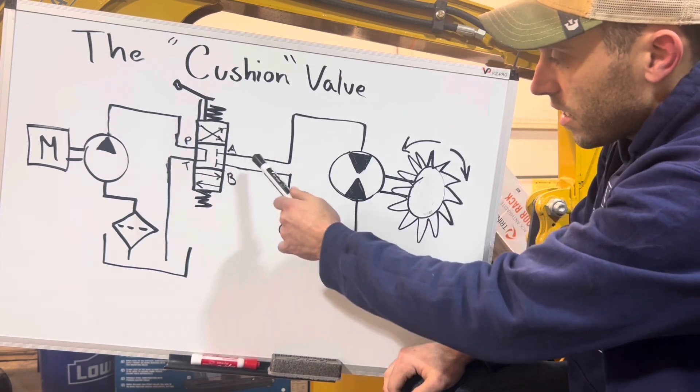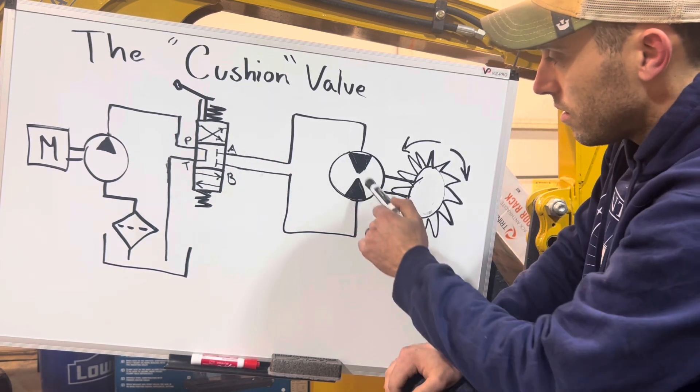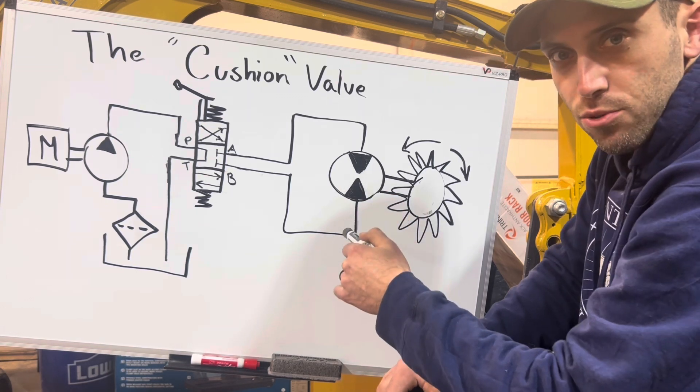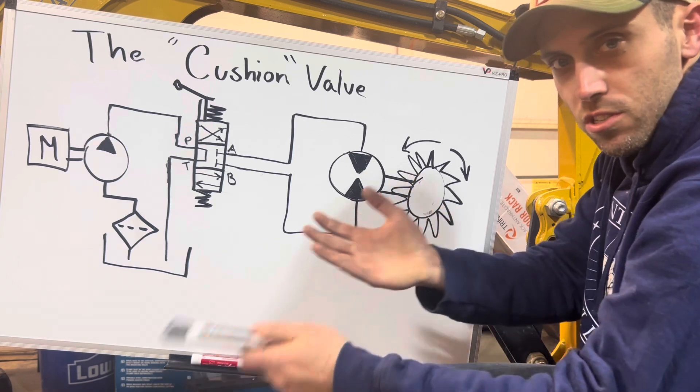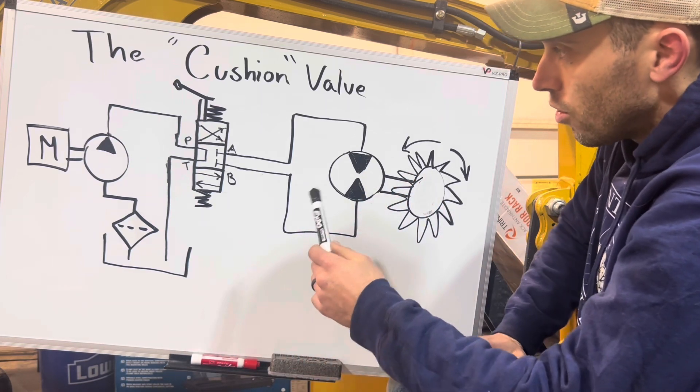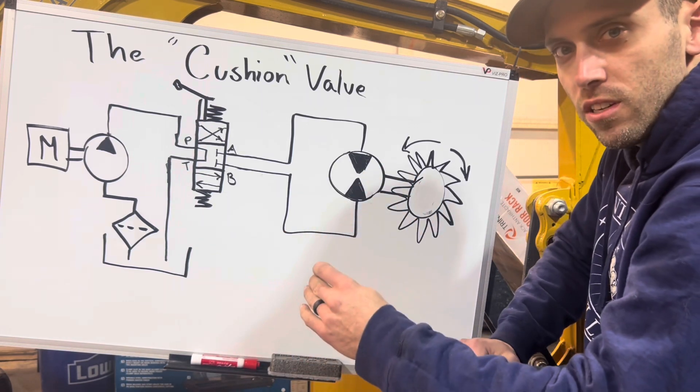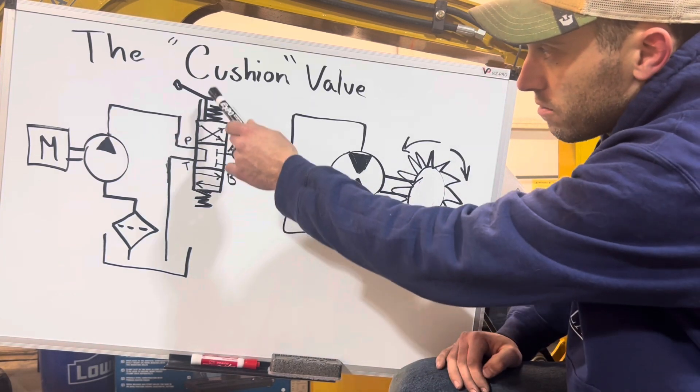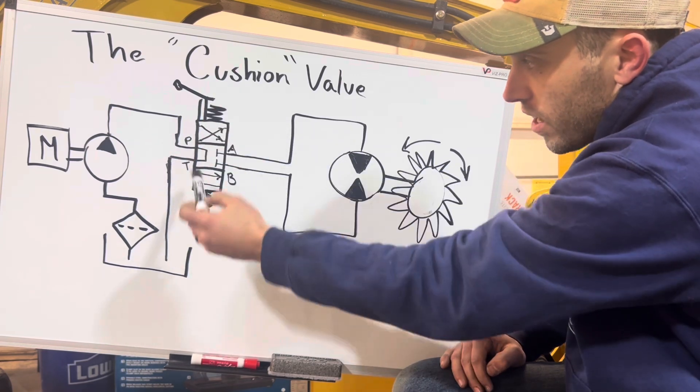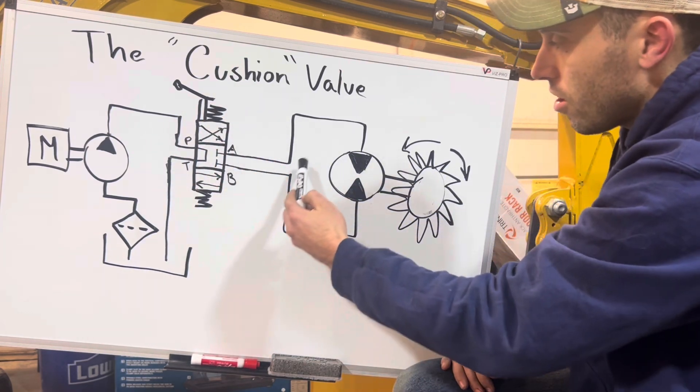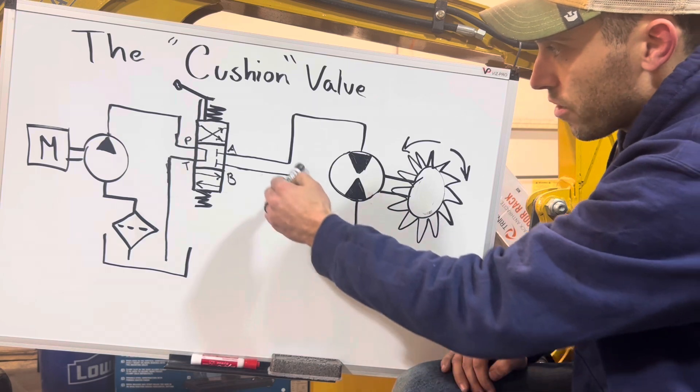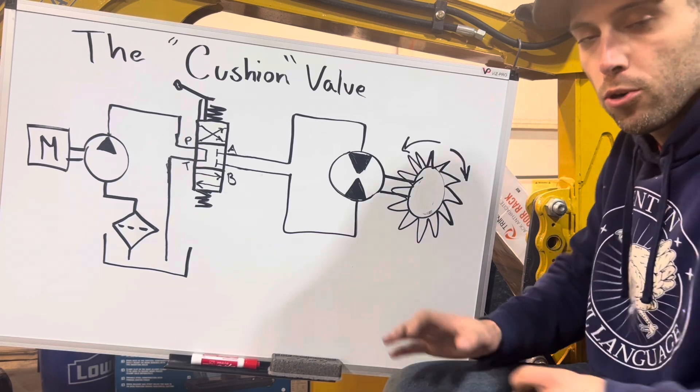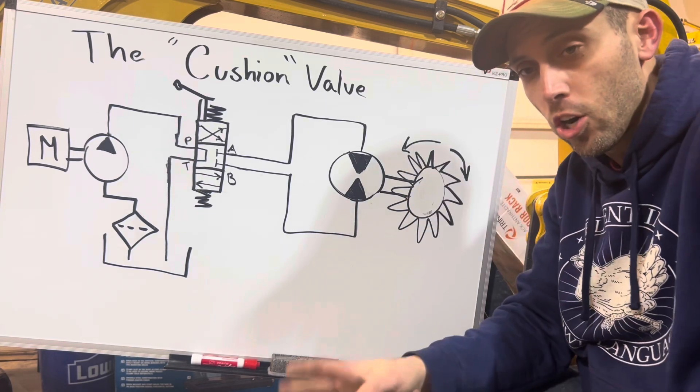Then the lines come out of the A and B port, we go into our rotary actuator. This is a fixed displacement dual direction rotary actuator, because as we know, you can slew both ways. So what happens when you're normally slewing around in a circle is you've got this DCV pushed one way or the other, and you're causing fluid to flow through this actuator and back to the tank. And we're just doing this nice cycle. Everything's fine.